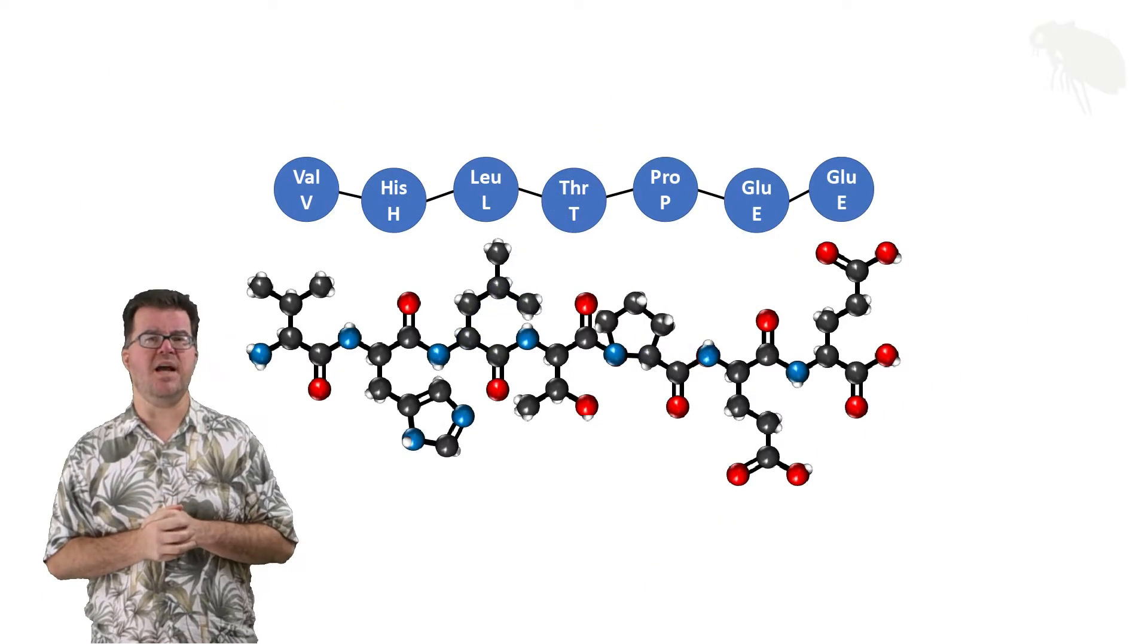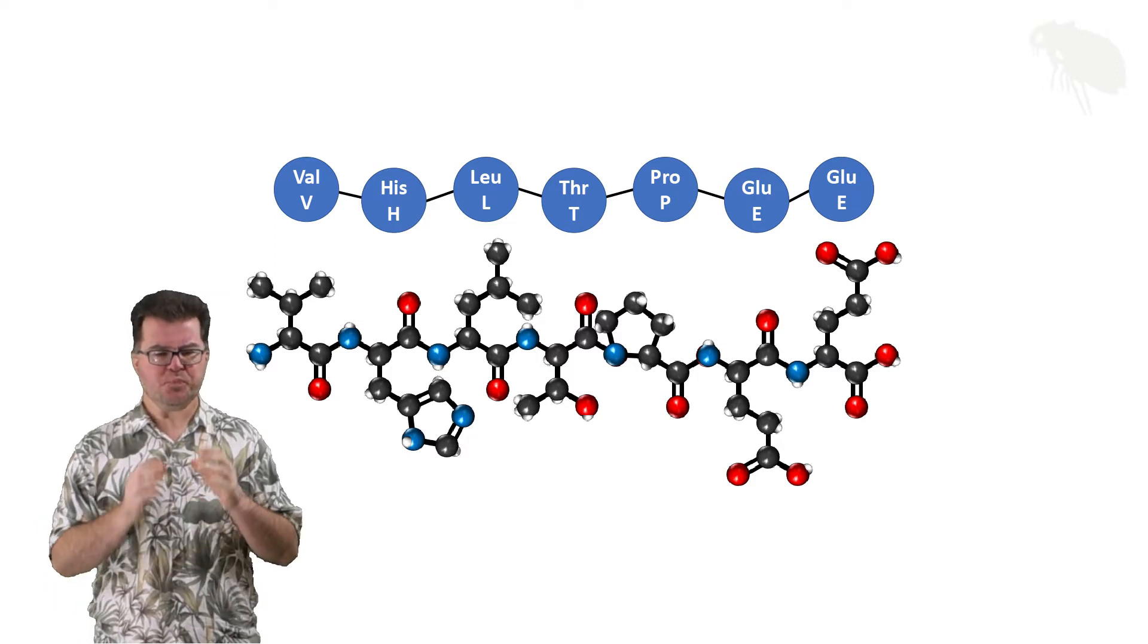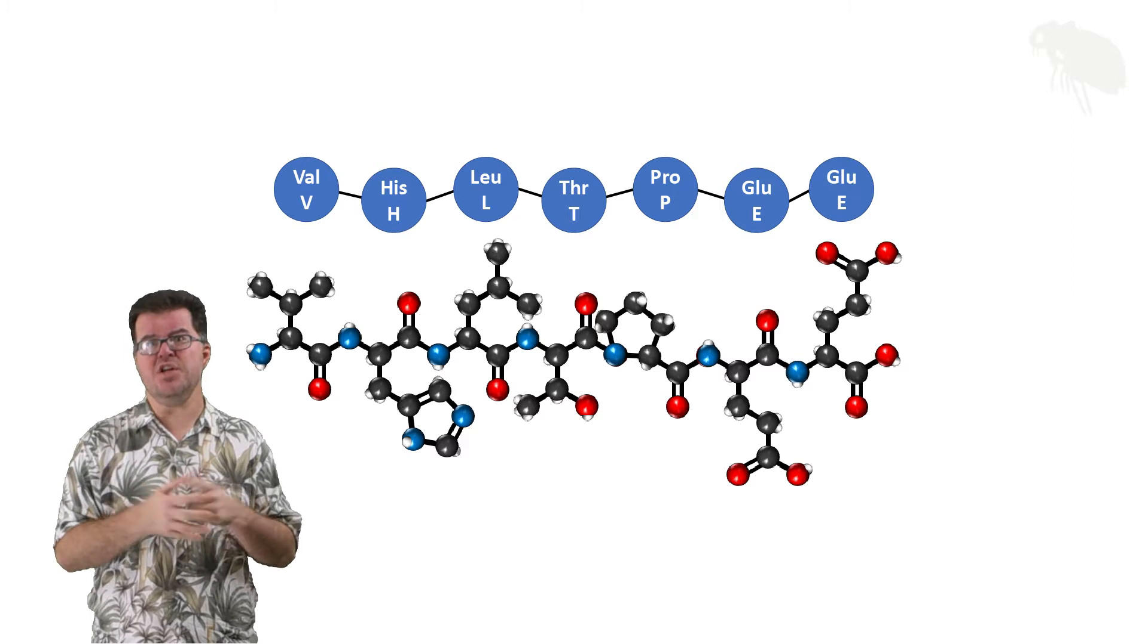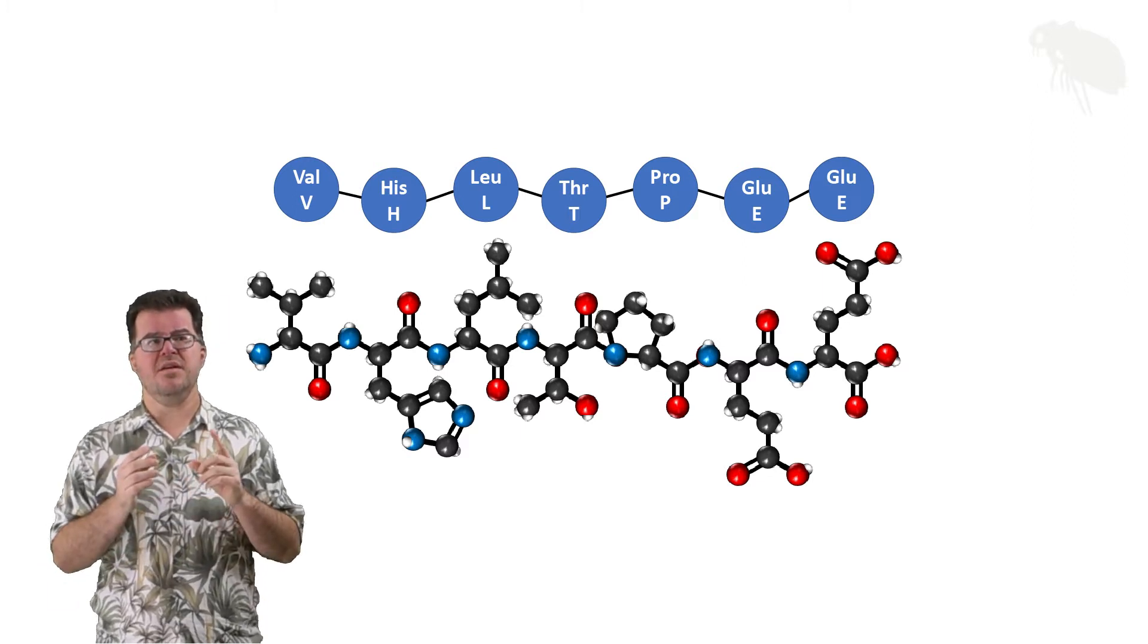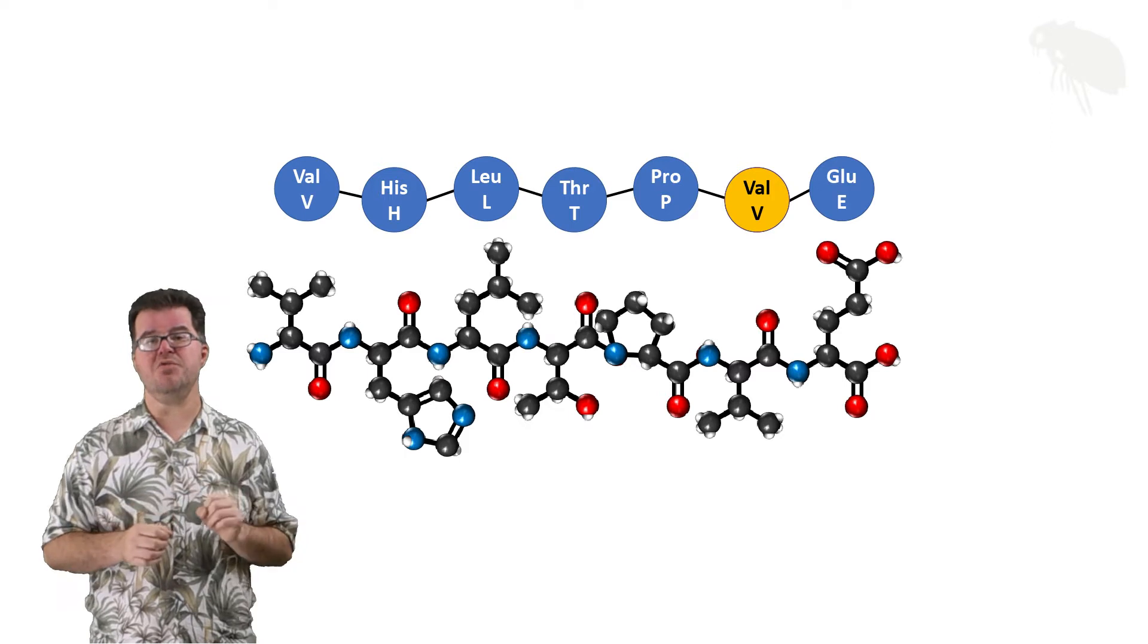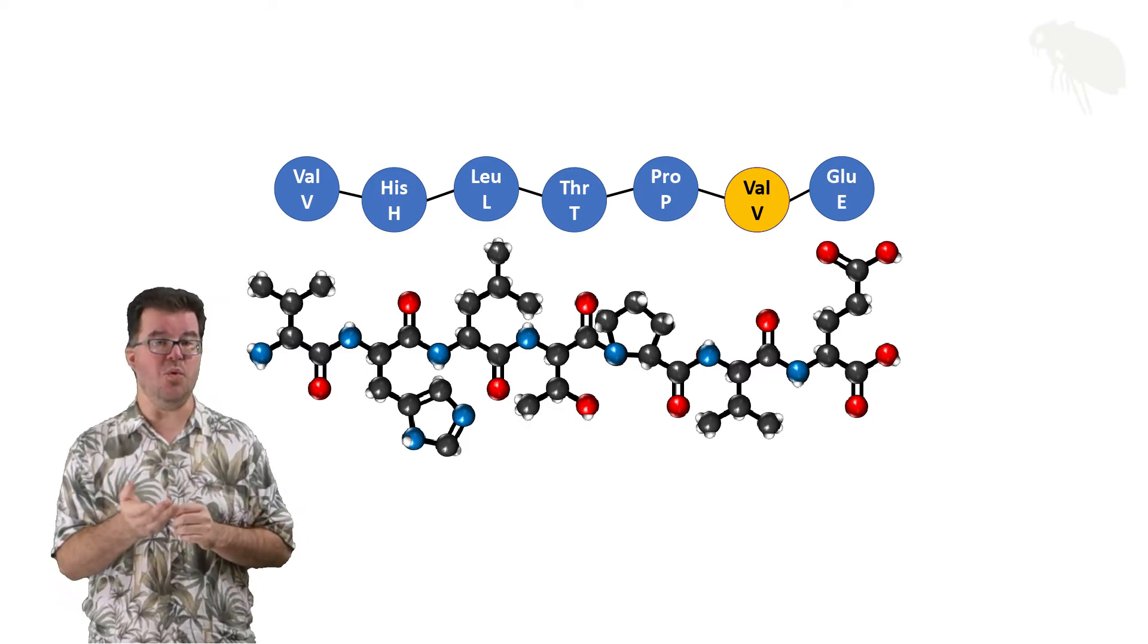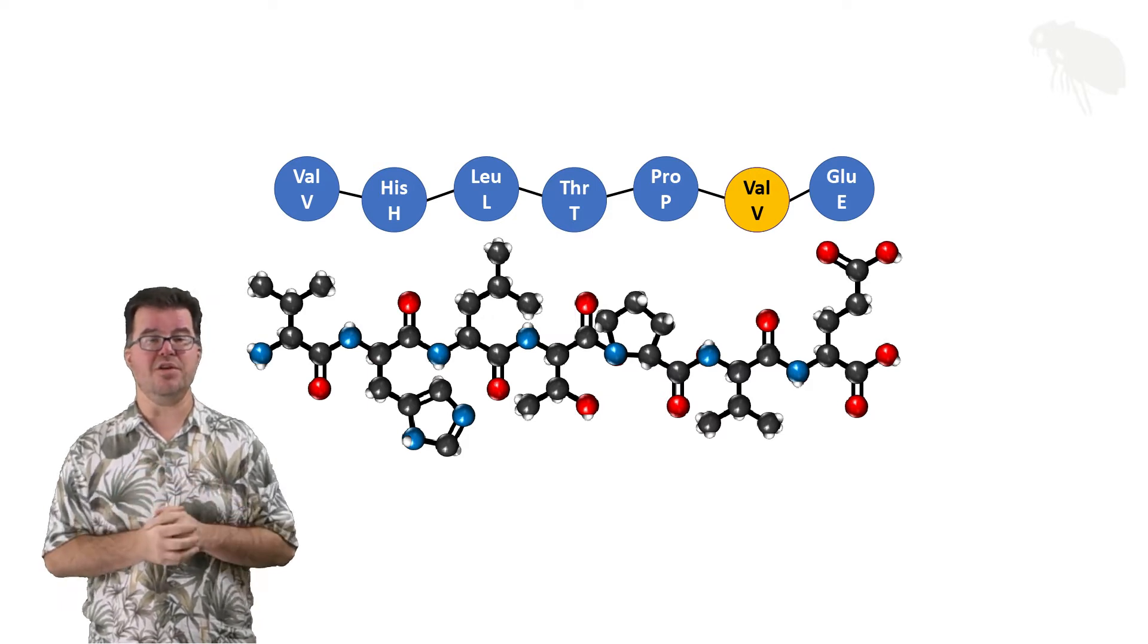Consider this polypeptide. I presented it back in my primary and secondary structure video. This isn't a random assortment of amino acids. It's actually the first seven amino acids of beta hemoglobin. And what I'm going to do now is take that sixth position glutamate. I'm going to replace it with a valine. I just substituted in a non-polar amino acid for an acidic one. It's the only change I'm making to the entire chain. Let's take a look at the consequences.